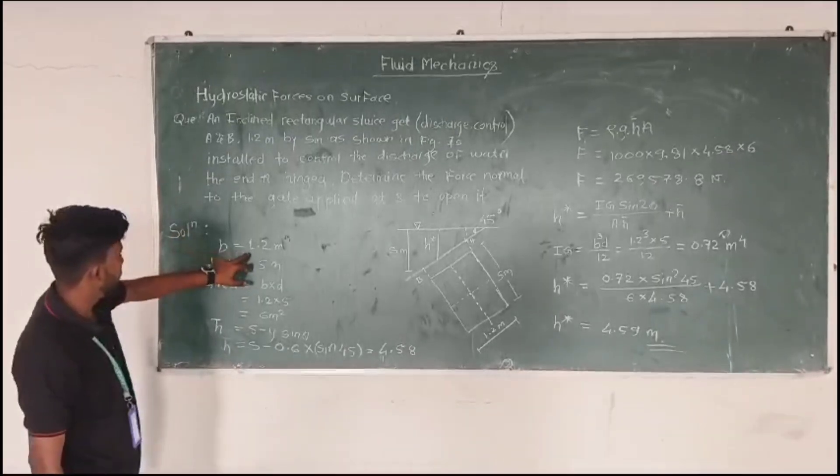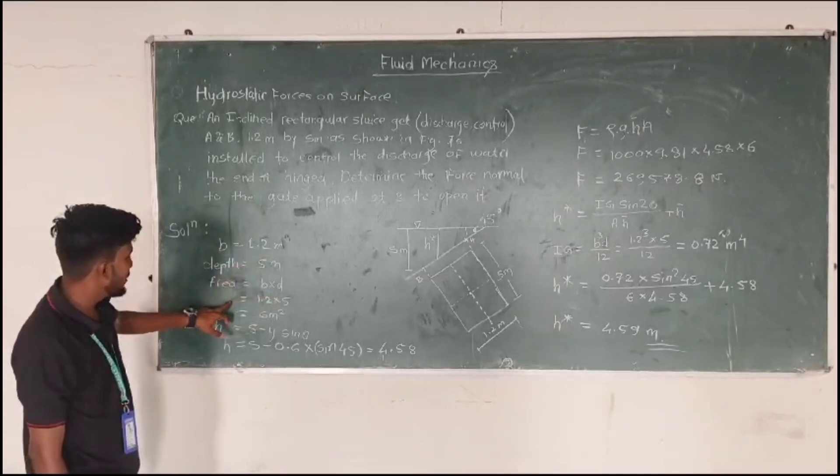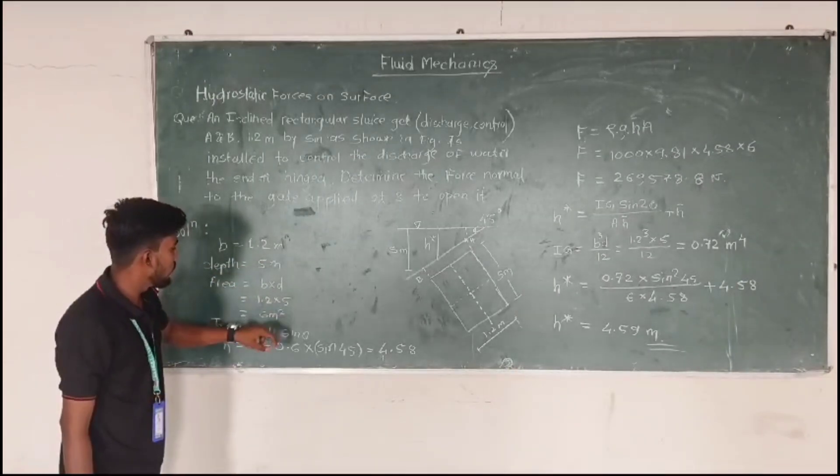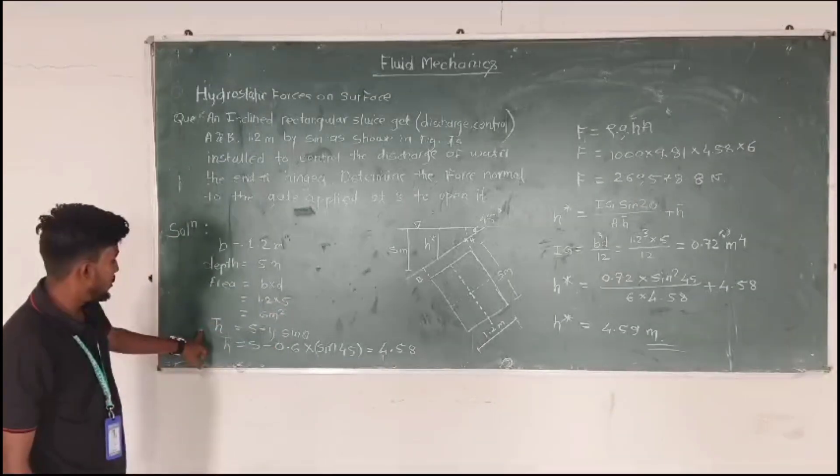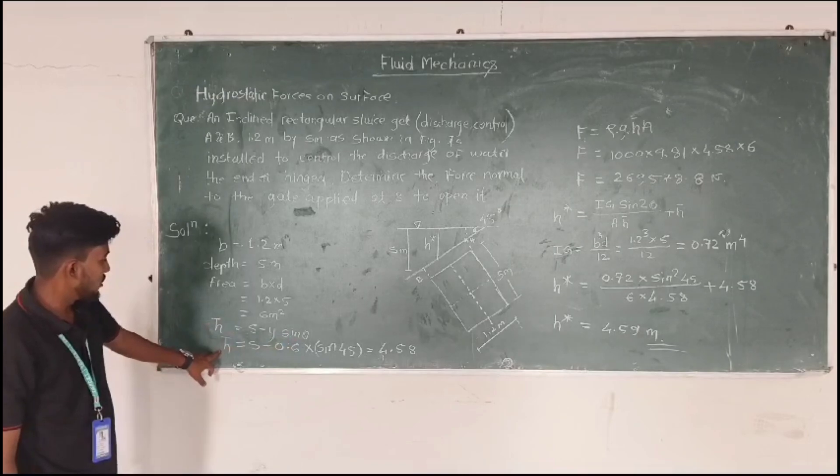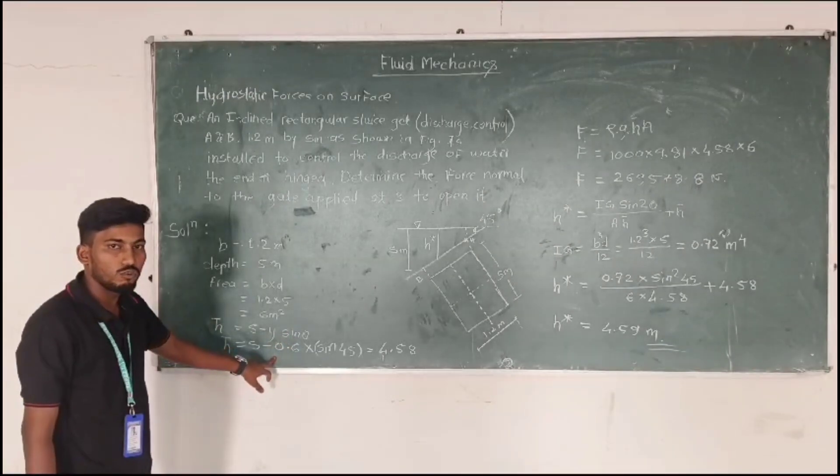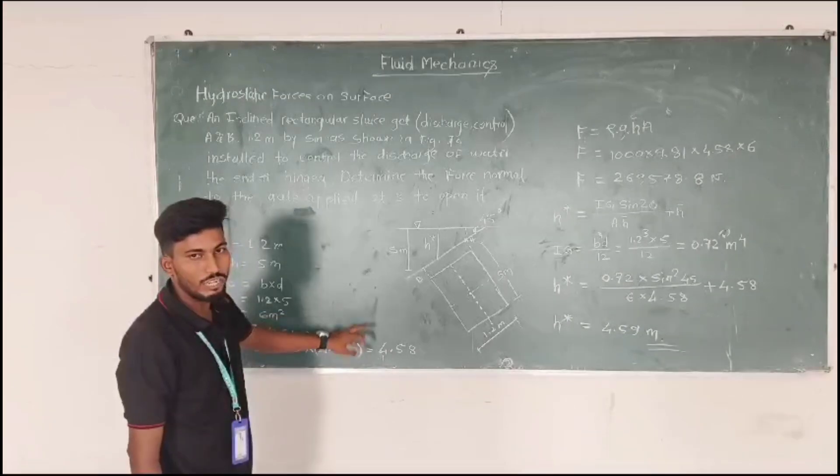Solution. B is equal to 1.2 meter, L Hiometer area A into B is equal to area is equal to 6 meter square. Yachubar is equal to HiO minus 5, Yachubar. Yachubar is equal to side 45 is equal to 5 over 15 meter.